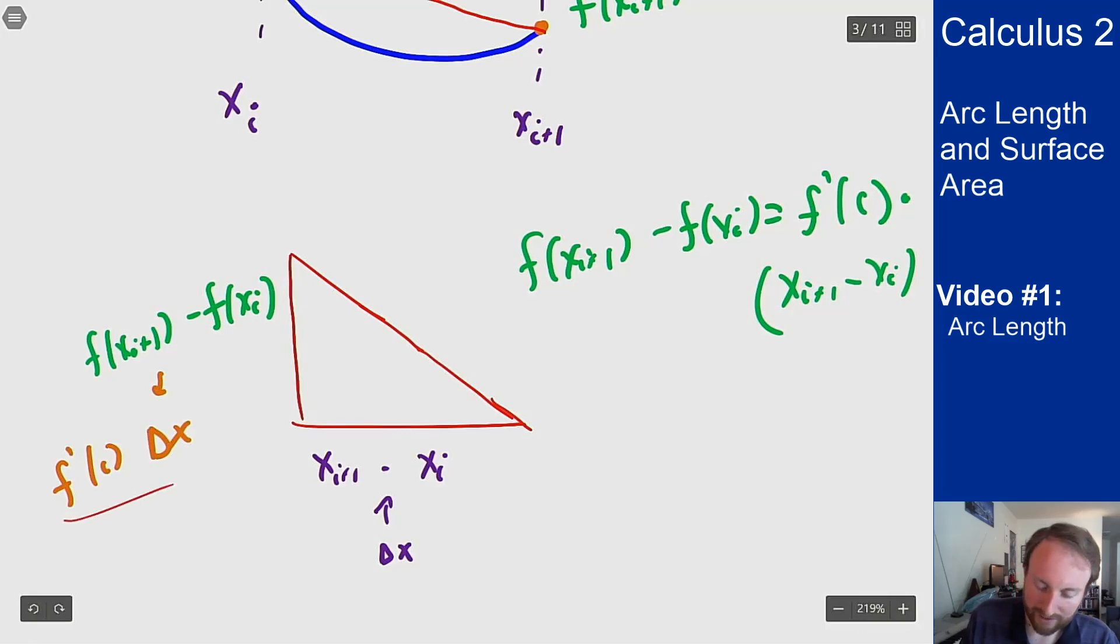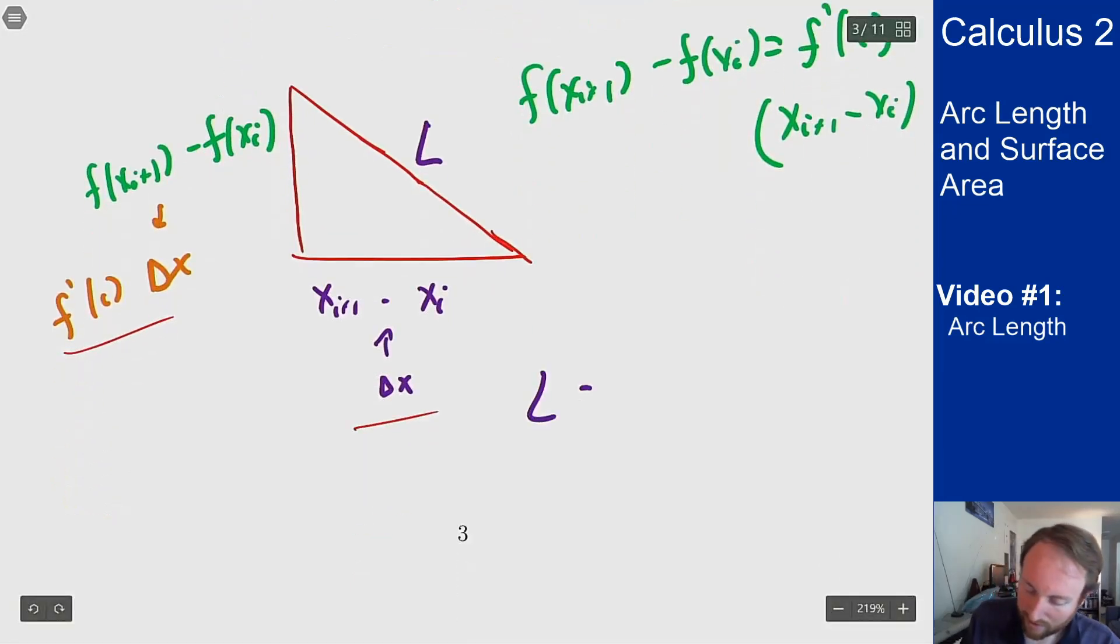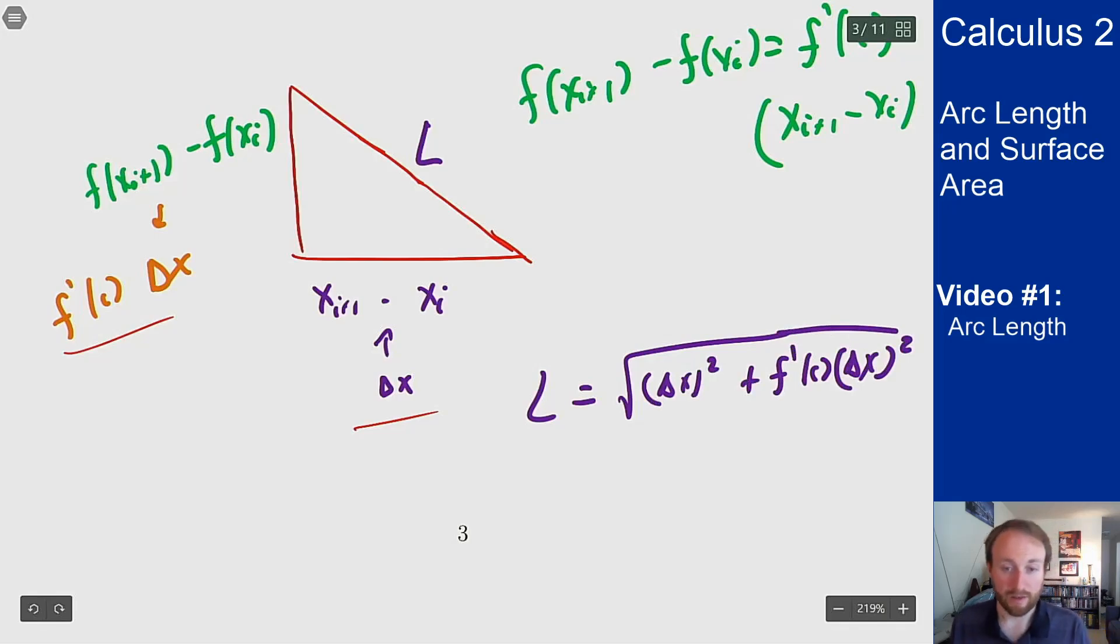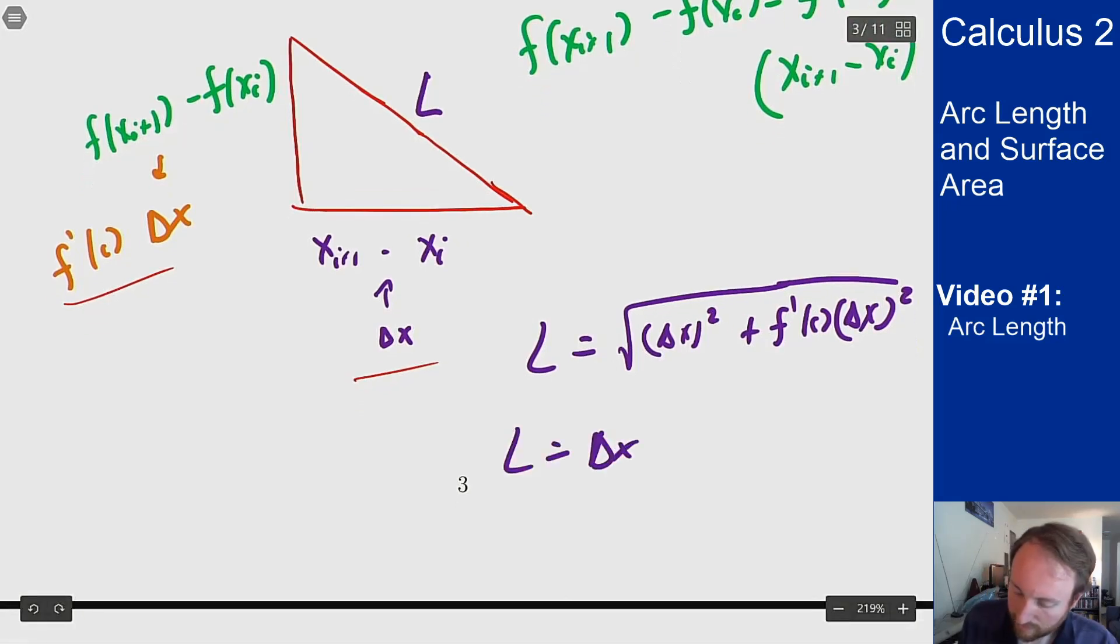Now that I have these two sides of my triangle, I can figure out the length of my line segment. We get that L should be the square root of delta x squared plus (f'(c) times delta x) squared. I can pull a delta x out of the square root sign to get delta x times the square root of 1 plus f'(c) squared.